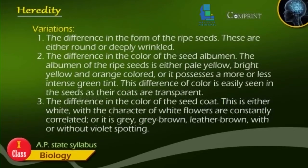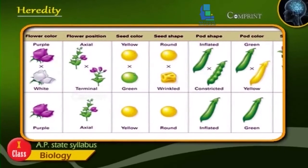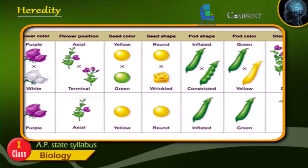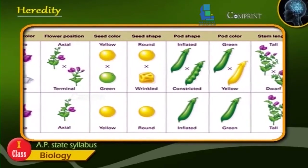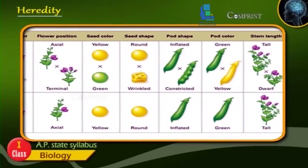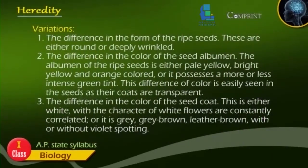1. The difference in the form of the ripe seeds — these are either round or deeply wrinkled. 2. The difference in the color of the seed albumen — the albumen of the ripe seeds is either pale yellow, bright yellow and orange colored, or it possesses a more or less intense green tint. This difference of color is easily seen in the seeds as their coats are transparent. 3. The difference in the color of the seed coat — this is either white with white flowers, or grey, grey-brown, leather-brown with or without violet spotting.